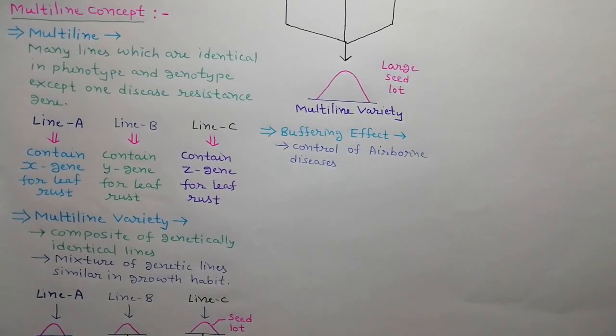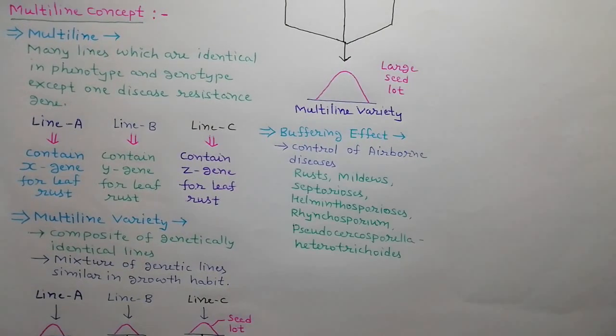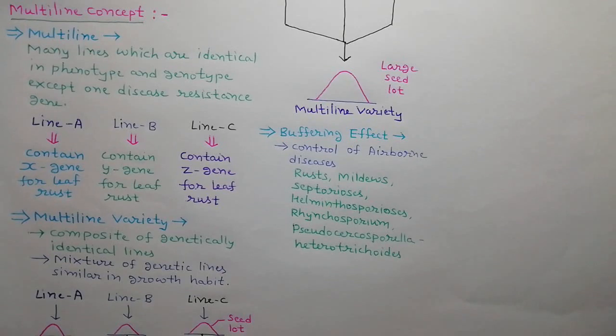Multilines can significantly improve the control of any disease that has an airborne dispersal phase, such as rusts, mildews, septoriosis, helminthosporiosis, rhynchosporium, and even pseudocercosporella herpotrichoides. Often to the extent that the use of fungicide becomes uneconomic.